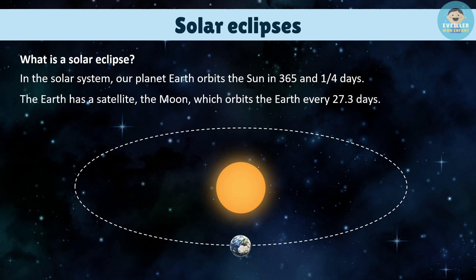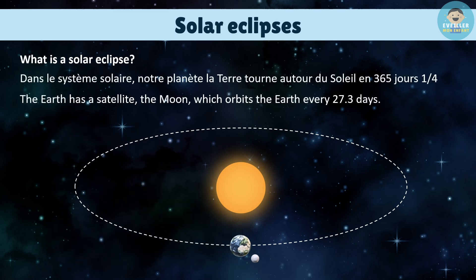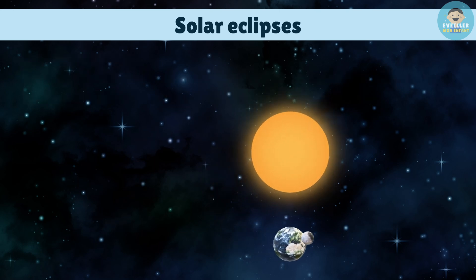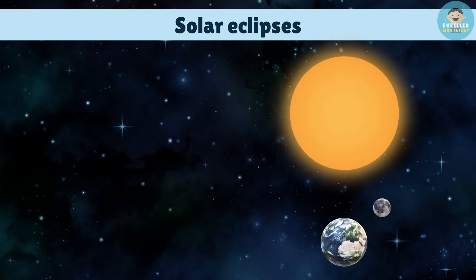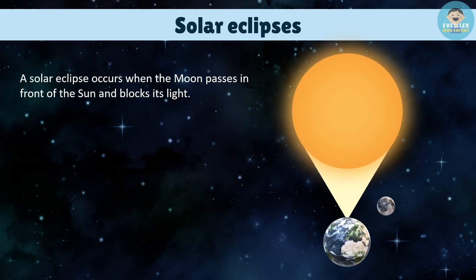The Earth has a satellite, the Moon, which orbits the Earth every 27.3 days. A solar eclipse occurs when the Moon passes in front of the Sun and blocks its light.